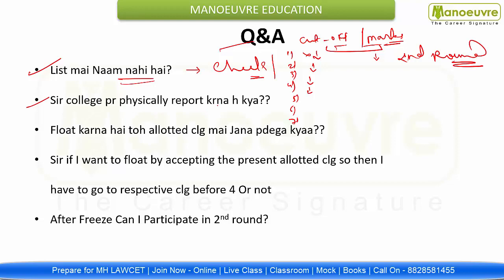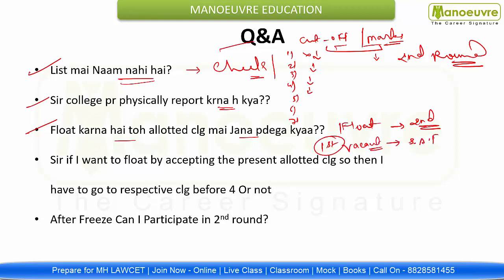Second question: Sir, do we have to physically report to the college? Go to the admission notice on the college's official website, check it, and according to that you have to pay the seat acceptance fees. You can also contact the college's admission department — call them and discuss. You can pay fees accordingly. Third question: If I want to float, do I have to go to the allotted college? No. If you are floating the option, you are participating in Round 2. But yes, if you want to keep the first seat vacant for you, you have to pay the seat acceptance fees — contact the particular college's admission department for that and you can pay online.